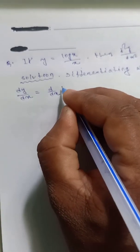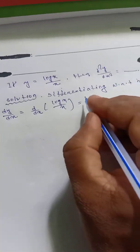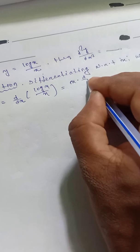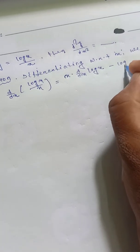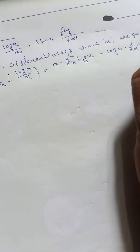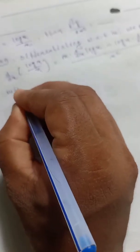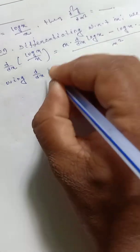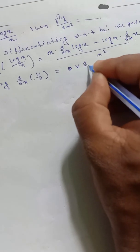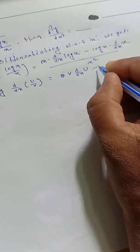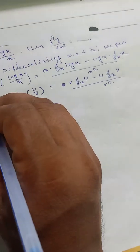dy by dx equals d by dx of log x by x, which is nothing but x times d by dx of log x minus log x times d by dx of x, divided by x square. We are using the quotient rule formula: d by dx of u by v equals v times d by dx of u minus u times d by dx of v, divided by v square.